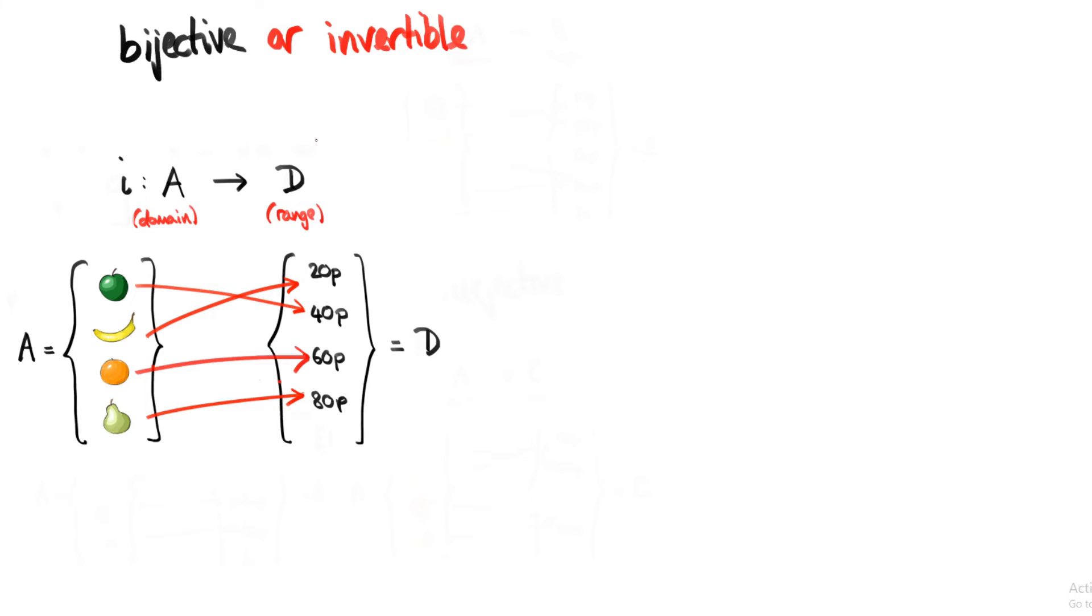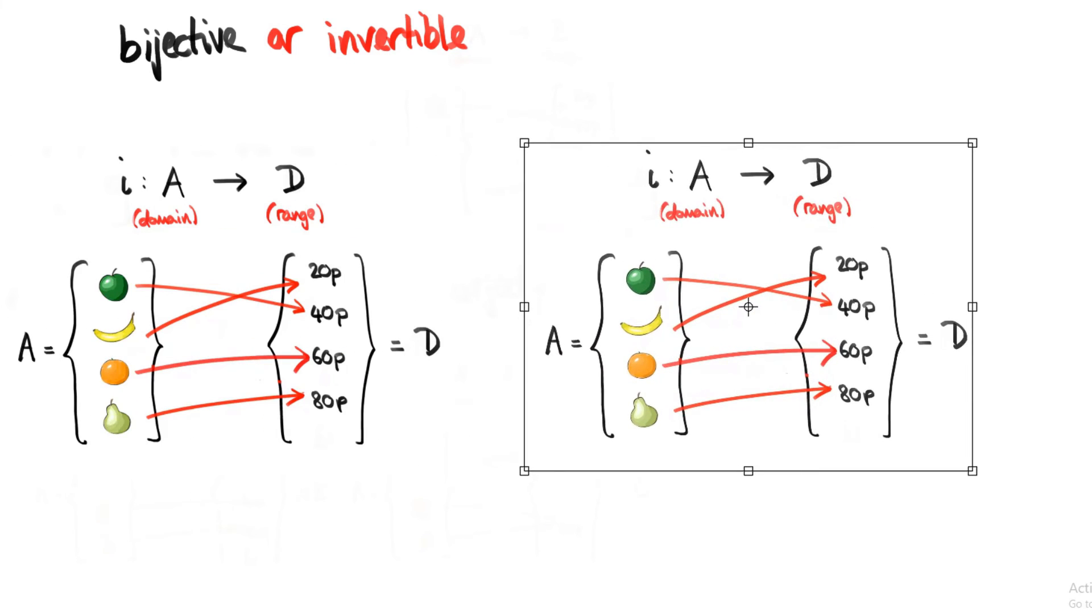You see, i is not just defining a function that goes from A to D, but it's also defining a function that goes from D to A. If I invert all of these arrows, instead of having the arrows pointing from the set A into the set D, we instead have them pointing from the set D into the set A. You can see that we've created a new function.